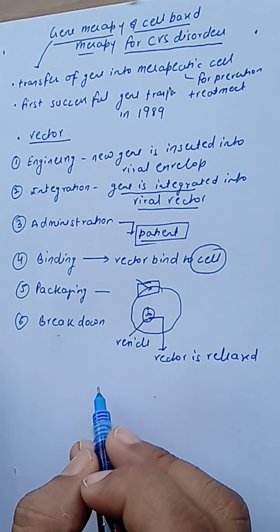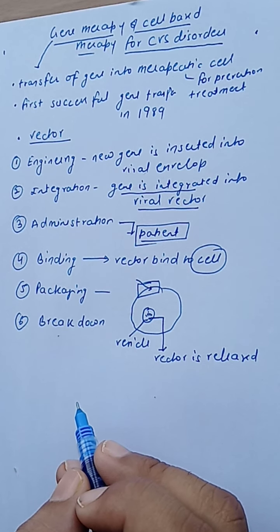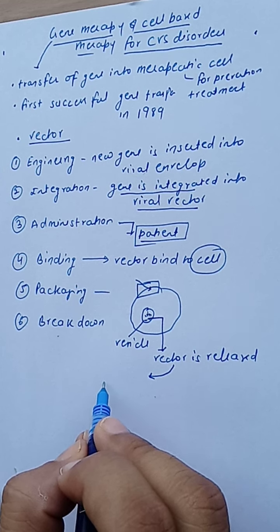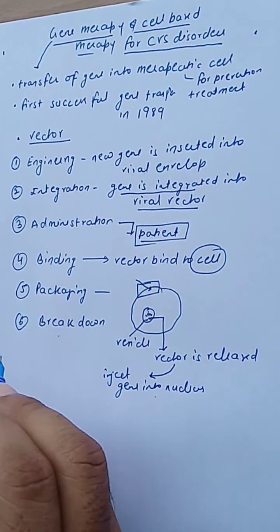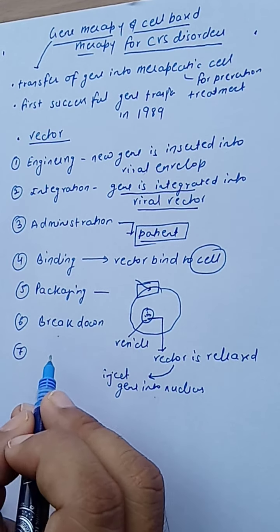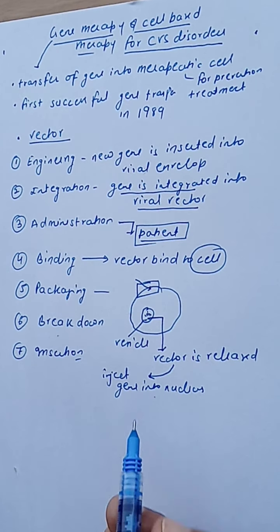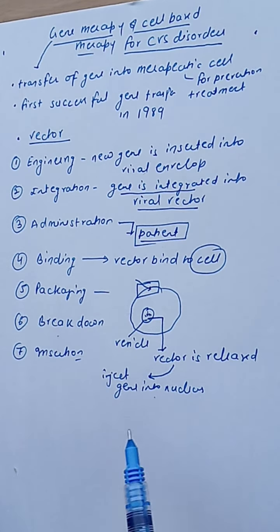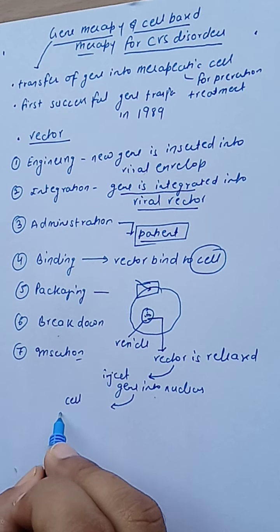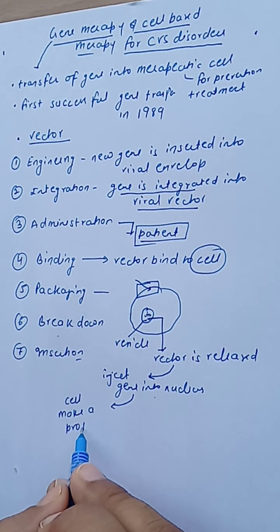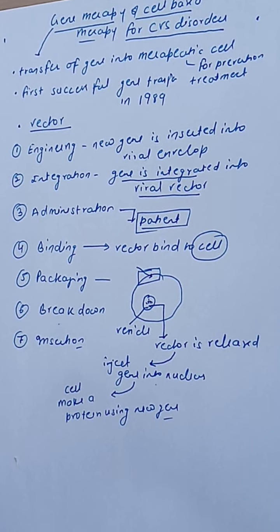The released vector helps to insert the new gene into the nucleus. This final step is called insertion. After that, the cell will make a protein using the newly injected gene. That is the overall process of gene therapy.